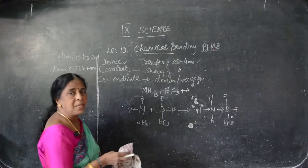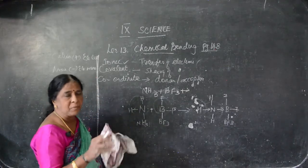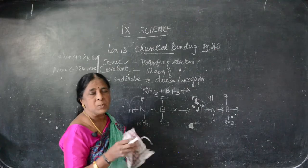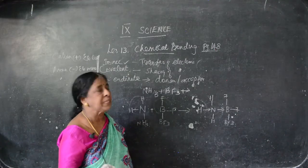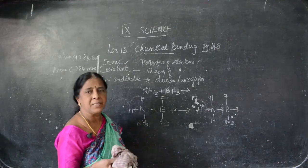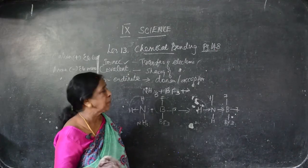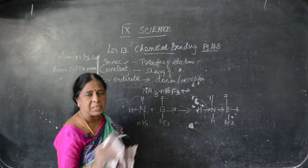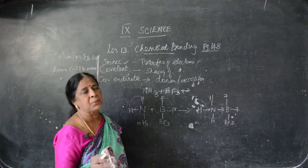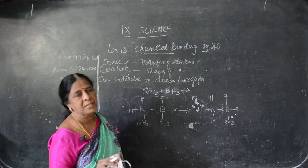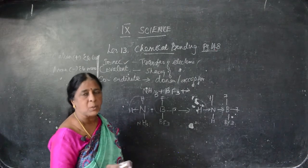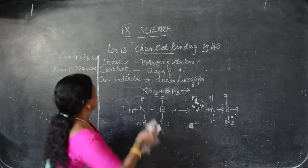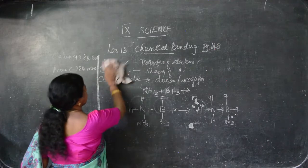Now we have to say, because of the formation, what are the reactions that happen? That is oxidation — either the oxygen may be increased — reduction — hydrogen may be increased — and both are simultaneously occur together, that is redox reaction. We have to say what is oxidation, what is reduction, what is redox reaction.